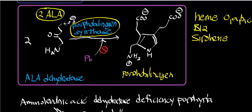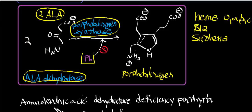Another name for this enzyme is delta-aminolevulinic acid dehydratase, because part of the mechanism involves a dehydration of delta-aminolevulinic acid. This enzyme is pretty strongly inhibited by lead, which is part of the mechanism of lead toxicity. The regulation, inhibition, and activation of this enzyme will be covered in a completely separate video, mainly because it uses a very special type of allosteric regulation called morpheein allosteric regulation.